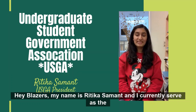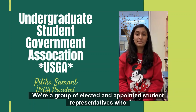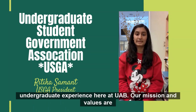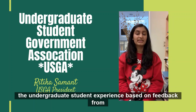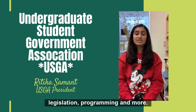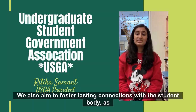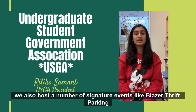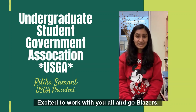Hey Blazers, my name is Rithika Samant and I currently serve as the Undergraduate Student Government Association President. In short, we're a group of elected and appointed student representatives who collectively represent, advocate for, and connect with students throughout their undergraduate experience here at UAB. Our mission and values are redefined each year from administration to administration, but the common thread we hold close is the mission of forever improving the undergraduate student experience based on feedback from legislation, programming, and more. As such, we value leadership, service, innovation, integrity, and excellence. We also aim to foster lasting connections with the student body as its needs emerge and change. Beyond legislative work through the USGA Senate, we also host a number of signature events like Blazer Thrift, Parking Amnesty Day, and Student Forum, which all aim to engage and address the needs of undergraduate Blazers. Excited to work with you all, and go Blazers!